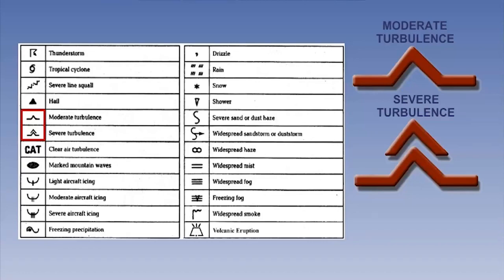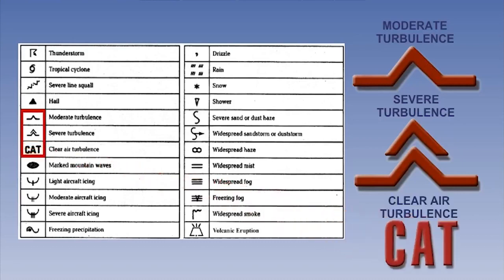If moderate or severe turbulence is forecast, then this is clearly displayed on the SIG weather chart by the following symbols. Light turbulence is not explicitly forecast on the SIG weather chart. Turbulence can be experienced either in cloud or in clear air. The latter form is called clear air turbulence, or CAT, and earlier we saw how this was clearly highlighted on the charts by way of the enclosed dashed lines and the CAT legend.